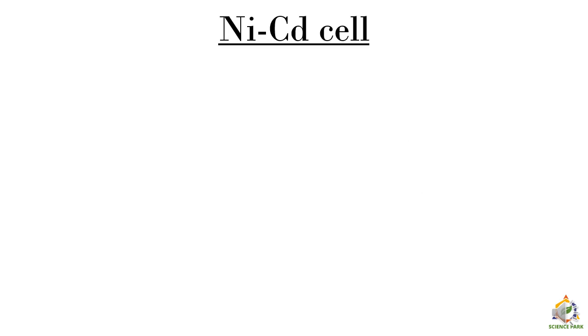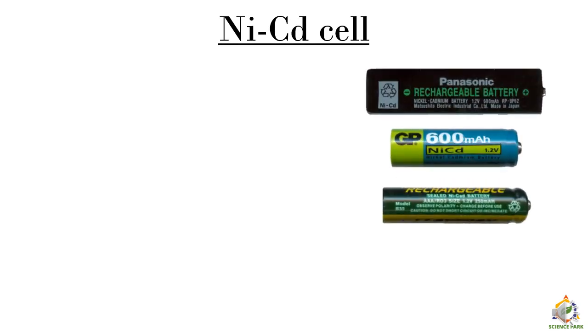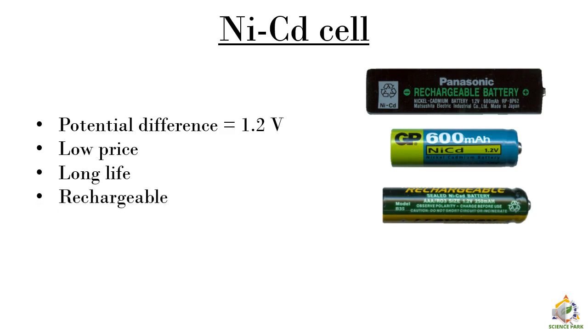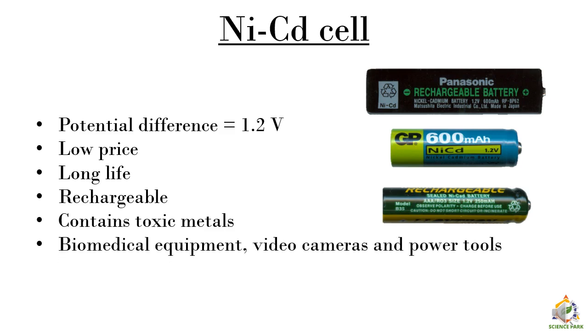The next type of electric cell is NICD, meaning nickel cadmium cell. The potential difference we get is around 1.2 volts. They are quite cheap nowadays. They have a very long life similar to the dry cell. The main property of these cells is that they are rechargeable. You can recharge them again and again. But it still contains few toxic materials. These are used in variety of instruments we use in our day to day life such as video cameras, a few power tools and in few biomedical equipment.